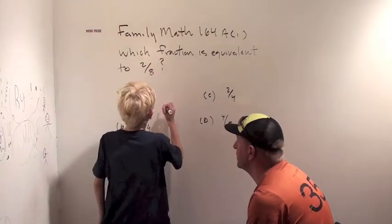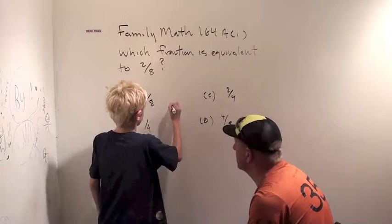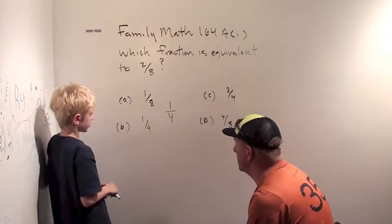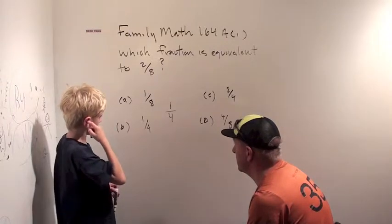So, 2/8, you can take a 2 out of it, and that's 1/4, and that's choice B. That's choice B.